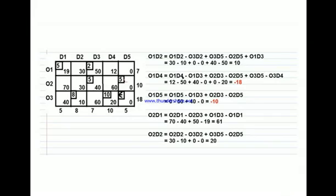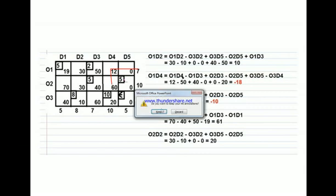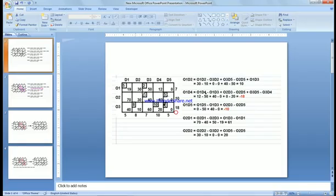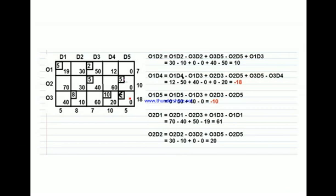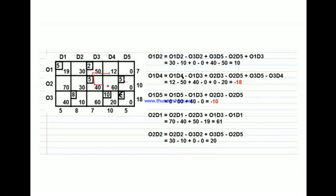Starting with another one: O1 D4. We could come here left to O2 D3, and O2 D5, O3 D5, O3 D4, and then we come back to it.